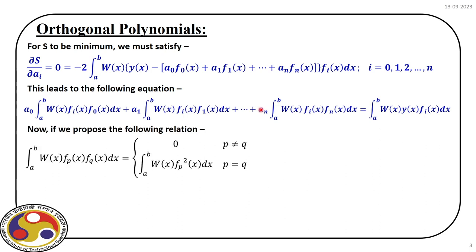This is the set of equations with n+1 unknowns: a0, a1 up to an, which we need to solve. The moment we define the weight function, we propose the orthogonality relation for orthogonal polynomials. When we integrate from a to b, wx times φp(x) times φq(x) dx, we get 0 for p not equal to q, and a finite value when p equals q. When this condition is satisfied, these functions are called orthogonal polynomials. Note that orthogonality is defined in terms of the weight function wx.